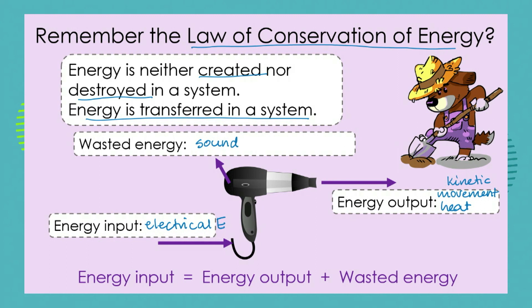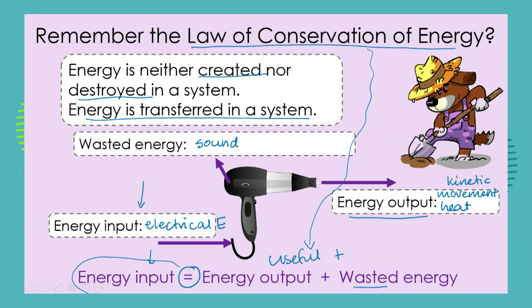So our energy input for the hairdryer is electrical energy — that's our input. We've established that our output is movement, kinetic energy, and we've also got heat energy to dry our hair. But our wasted energy here is sound. The law of conservation of energy tells us that our energy input — our electrical energy — must equal our useful energy output plus our wasted energy. So putting the useful and the wasted energy together, we should arrive at what the total energy output in fact was. In our next lesson, we're going to start exploring this equation between useful energy, wasted energy, and energy input.